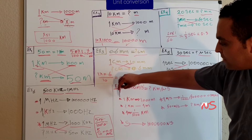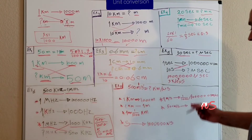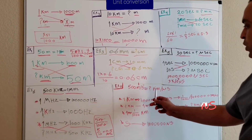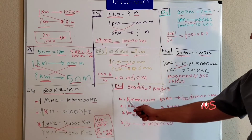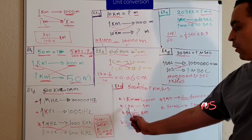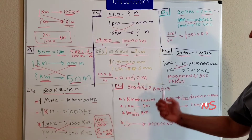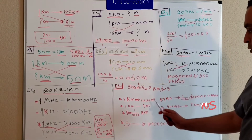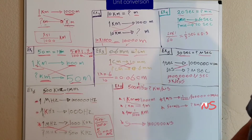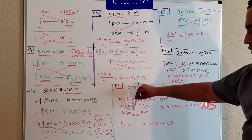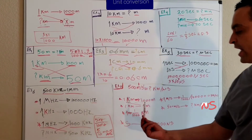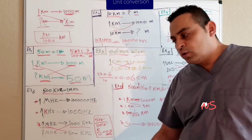First, convert the distance unit from meters to kilometers. We know that one kilometer equals one thousand meters, so we need to find how many kilometers are in one meter. We multiply one by one and divide by one thousand, so one meter equals one over one thousand kilometers.